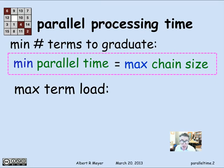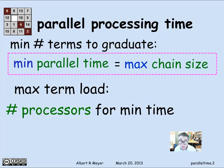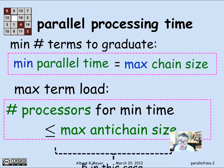Now, what about the maximum term load? That corresponds to the number of processors you need to be doing tasks in parallel. For the course scheduling example, it means how many subjects you can take in one term. But if you were doing computations, it means how many separate CPUs you would need to fully utilize the parallelism and do as much in parallel as you possibly could. A bound on the number of processors needed for minimum time is simply the maximum anti-chain size, which in the course scheduling example turned out to be five courses in the second term.